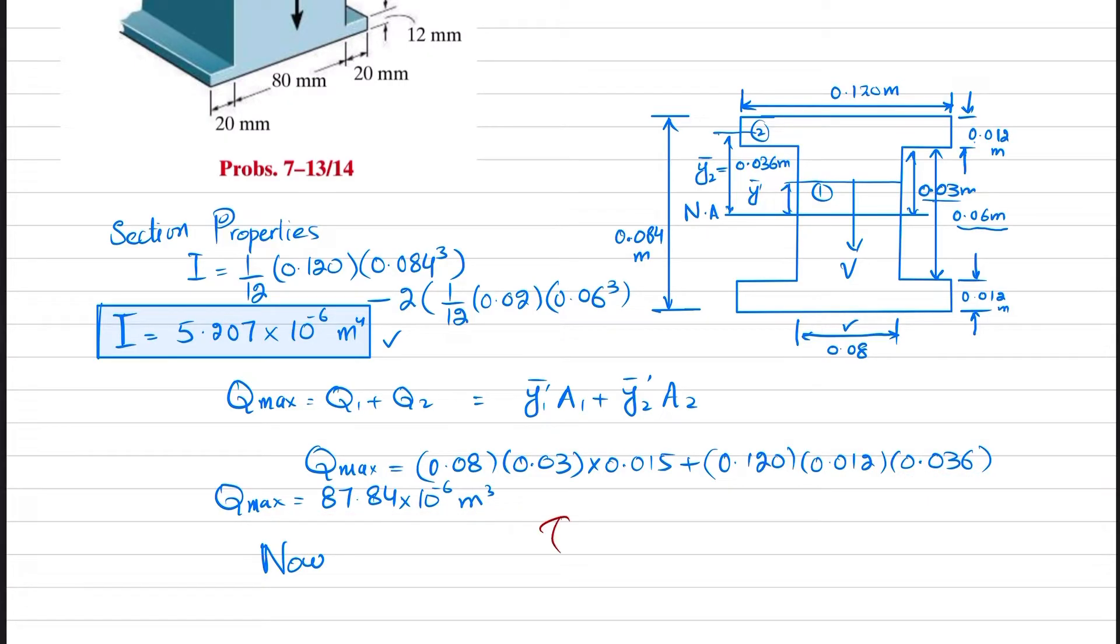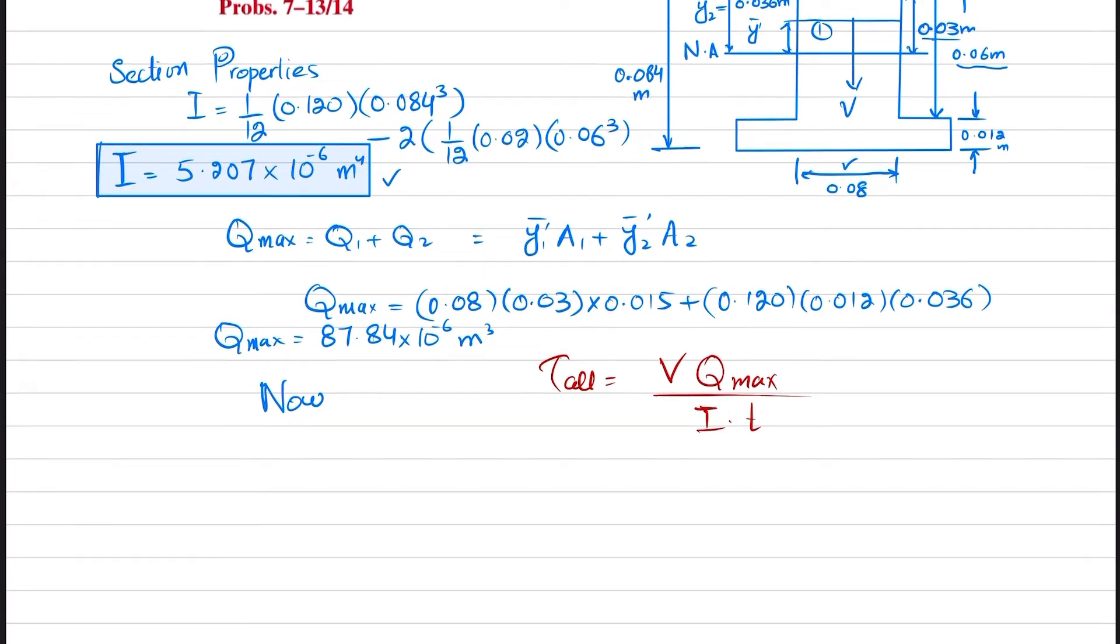Now we know that allowable shear stress equals V times Q_max divided by I times t. Put the values: 40 times 10 to the power 6 equals V times 87.844 times 10 to the power minus 6, divided by I, which is 5.207 times 10 to the power minus 6, times thickness 0.08. When you solve this, you get V equals 189,692 newtons.